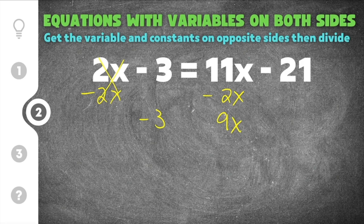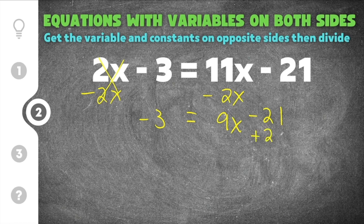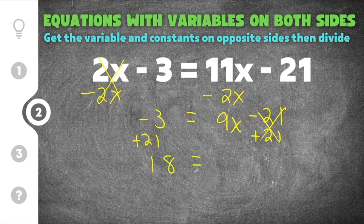Negative 3, or minus 3, comes right down, equals comes down, and then negative 21 or minus 21 also comes down. Now we have negative 3 equals 9x minus 21. This minus 21 has to go to the other side because we want all the constants on one side and all the variables on the other. The variable in this example is on the right-hand side. So the opposite of minus 21 is plus 21 — I'm going to add 21 here. Whatever you do to one side, you have to do the other, so we're going to add 21 here. And now we have negative 3 plus 21, which is 18. The equal sign comes straight down, and the 9x stays 9x.